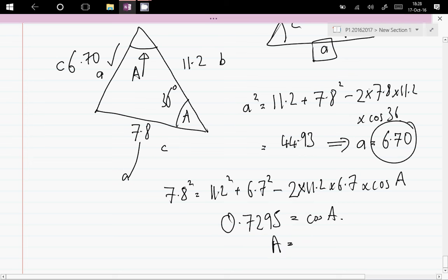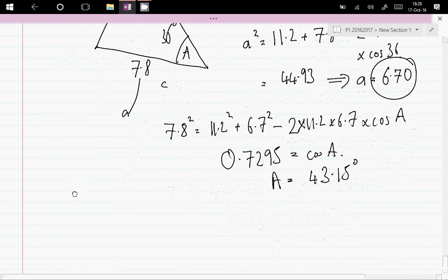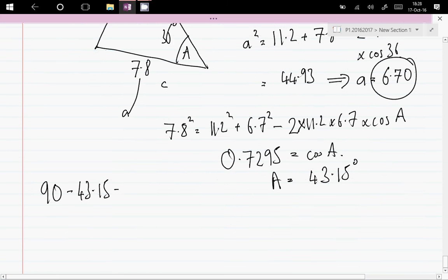So A equals shift cosine answer equals 43.15. Now we can find the third angle: 180 minus 43.15 minus 36 equals 101 degrees.